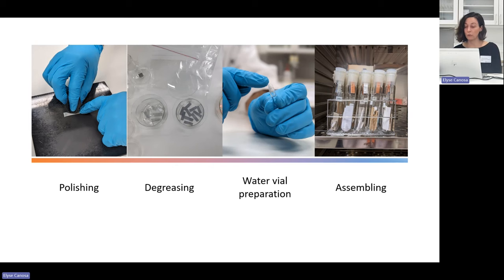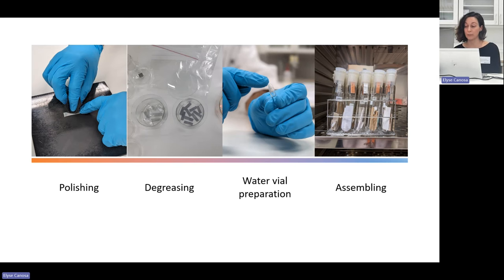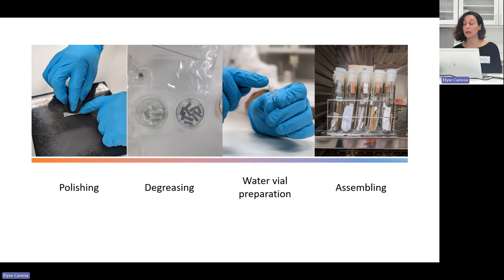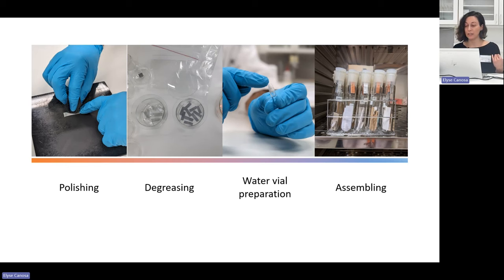We also include two control boiling tubes that do not have any material in them but do have the water vial and three metal coupons inside. This helps us determine if there is anything wrong with the batch of tests we are performing. This was actually very important for us at the very beginning of our Oddy testing because we were noticing some black spots and black corrosion on coupons from the control tubes. After doing some tests, we realized this was from our oven — it wasn't providing very even heating, causing condensation to form on our coupons, which led to the black corrosion. That told us we needed to buy a new oven for Oddy testing.